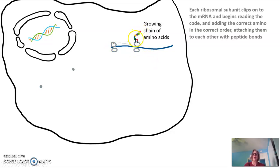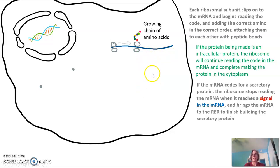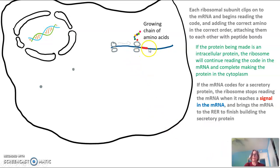Here we have my growing chain of amino acids — the protein polymer starting to grow. If the protein is an intracellular protein whose job is to stay inside the cell, the ribosome just continues reading the mRNA and completes the protein in the cytoplasm. However, if the mRNA codes for a secretory protein — one whose job is outside the cell — the ribosome will reach a signal in the mRNA that tells it to bring everything to the rough endoplasmic reticulum to finish building the protein.